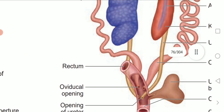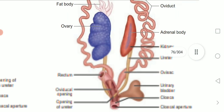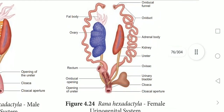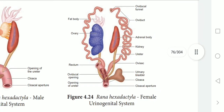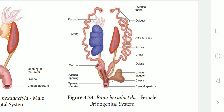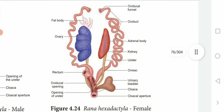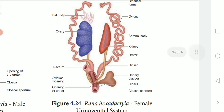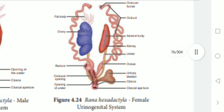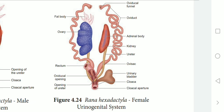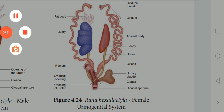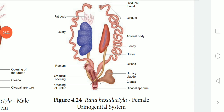The next topic is the female reproductive system of frog. The picture you are seeing is the female urinary genital system of Rana hexadactyla. The reproductive system of the female consists of paired ovaries.